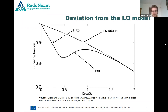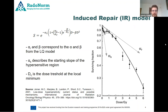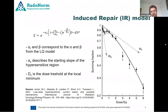For this region we have a model called the induced repair model, which is a phenomenological model. It modifies the LQ equation — the alpha parameter is calculated a little differently. We have alpha-r, alpha, and beta parameters as in the LQ model, plus an alpha-s parameter which is the starting slope of the hypersensitive region, and a dc parameter which is the dose at the local minimum.